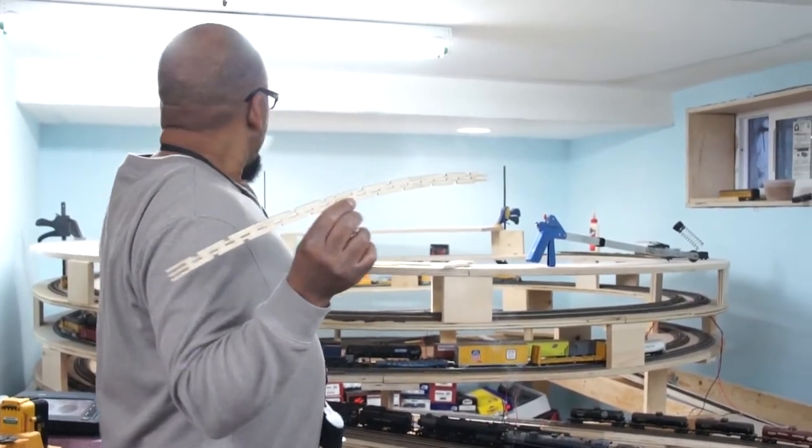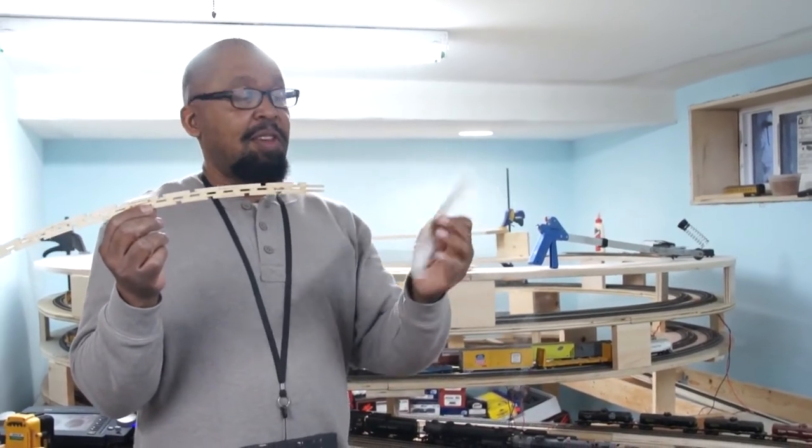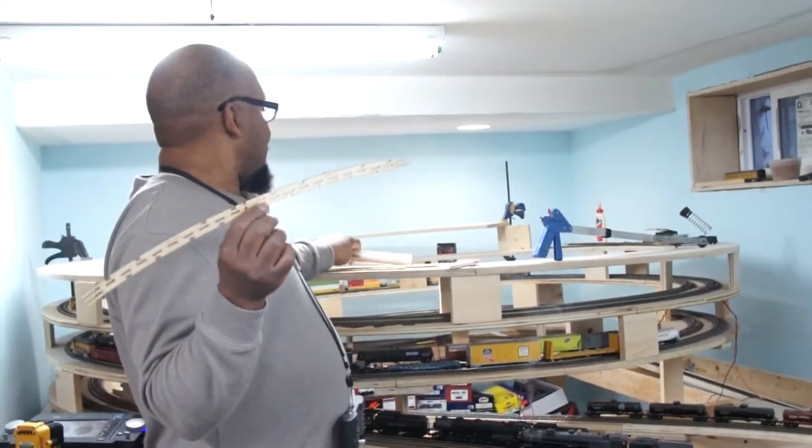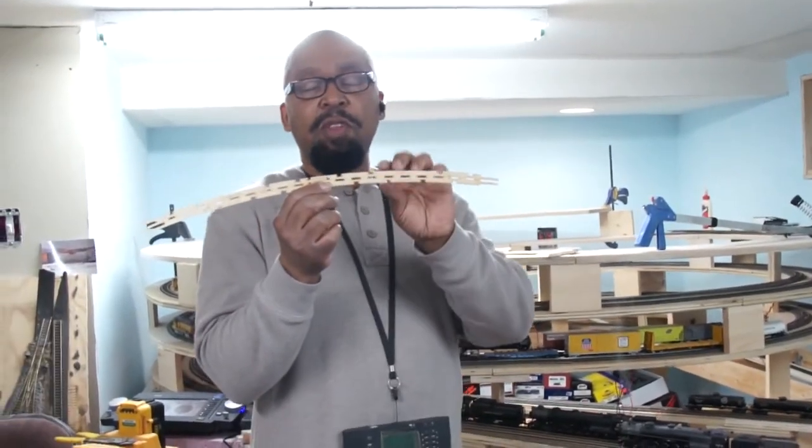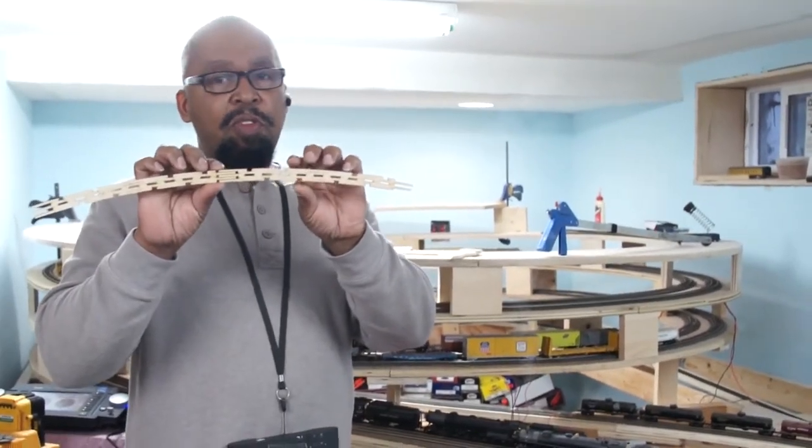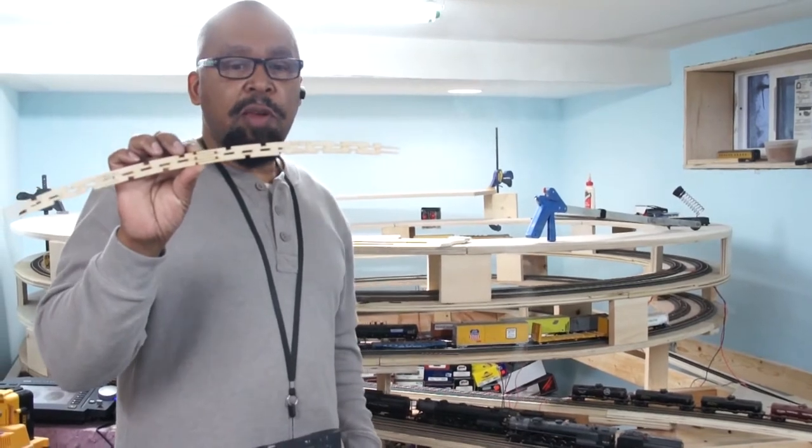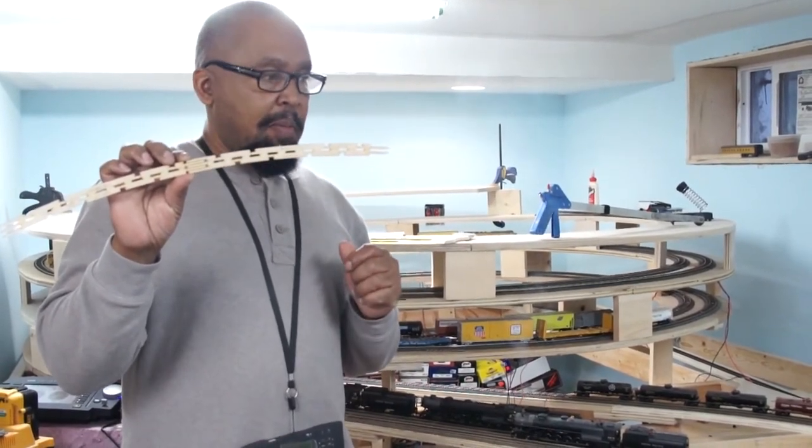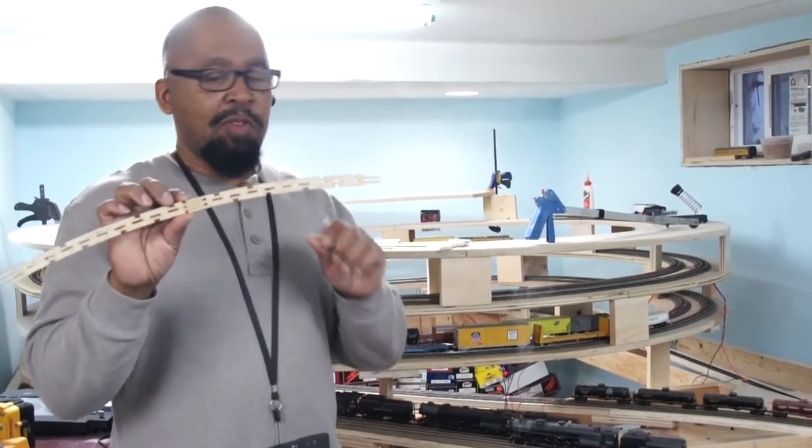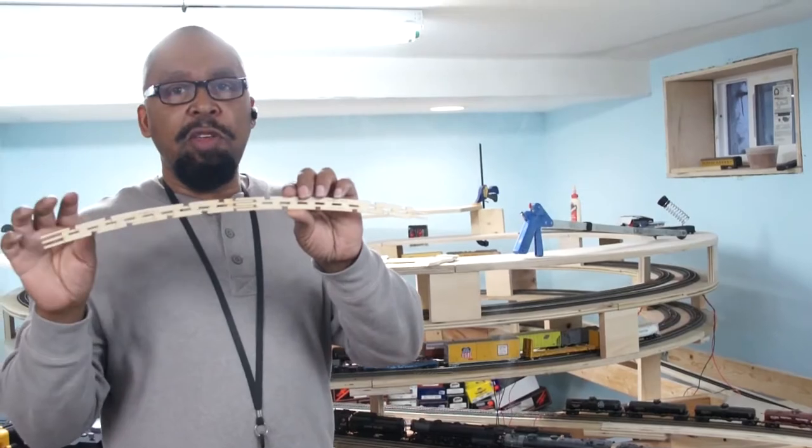I also can come off that 35 radius into my straights. And this works really well with Code 100. It works pretty good with Code 83 Micro Engineering, but the only thing is you have to do a little modification here. So let me show you an example of the modification that I did for the Code 83.